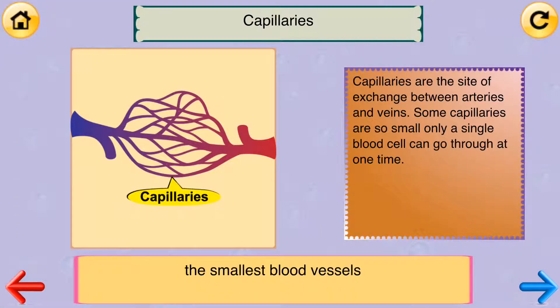Capillaries. The smallest blood vessels. Capillaries are the site of exchange between arteries and veins. Some capillaries are so small only a single blood cell can go through at one time.